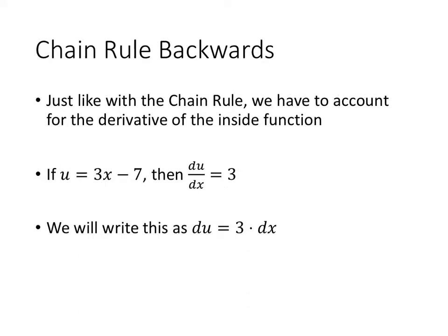Well, just like with the chain rule, we need to think about the derivative of that inside function. So if we set u equal to 3x minus 7, we need to think about the derivative of that u. The derivative of u with respect to x is 3, and we're going to write that as du equals 3dx.